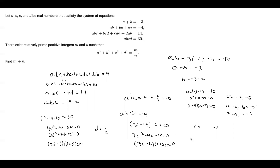Either way, a squared plus b squared plus c squared plus d squared equals (negative 5) squared plus 2 squared plus (negative 2) squared plus (3/2) squared, which simplifies to 141 over 4. Since 141 and 4 are relatively prime, the answer is m plus n equals 141 plus 4, which is 145. Thanks for watching and I'll see you in the next video.